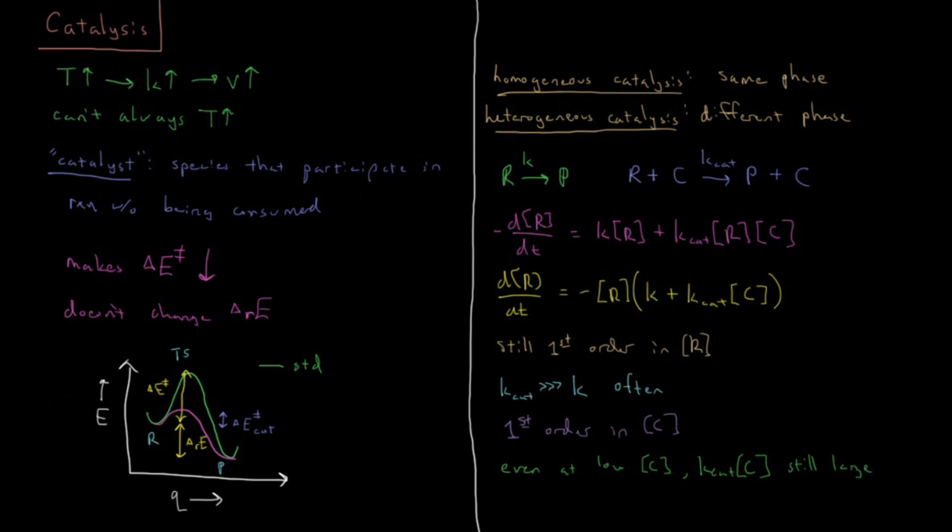And as we saw here, as we saw from the Arrhenius equation and as we see from these types of energy diagrams, even a small change in delta E of activation, so this will be delta delta E of activation, the change in how the activation barrier has changed between catalyzed and non-catalyzed versions of this reaction, even a small delta delta E of activation can lead to a big change in your observed rate constant.